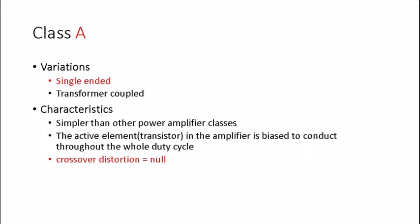Now I'll talk about Class A power amplifier variations and characteristics. Starting with the single-ended Class A power amplifier — this variation is commonly known as a common-emitter amplifier with biasing by an RC network on the base. The maximum efficiency for this single-ended Class A configuration is 25%, and we will get to why it cannot exceed 25% ideally.